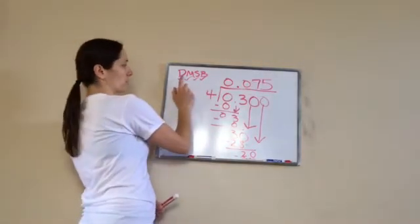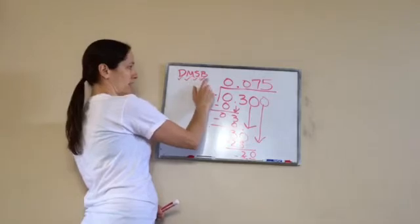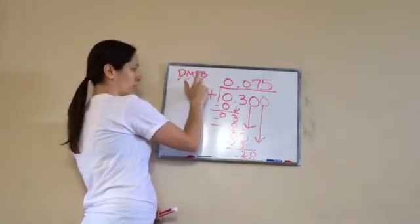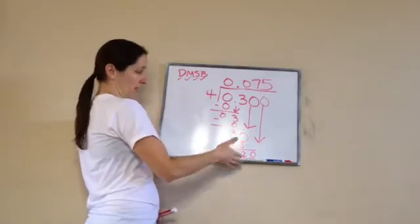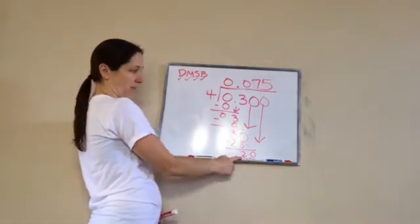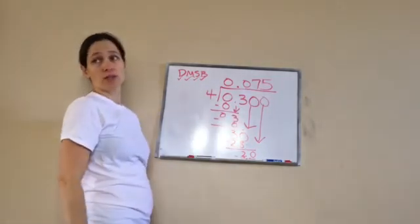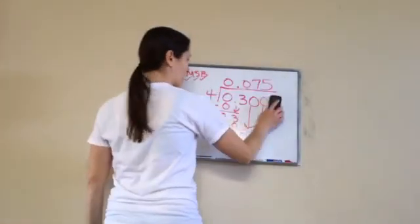When you keep doing this - divide, multiply, subtract, bring down - you keep doing it: divide, multiply, subtract, bring down, until there's nothing else to bring down. And then if it doesn't come out even, you have to add zero to keep it going. That is lesson 45.